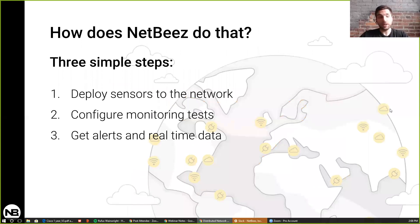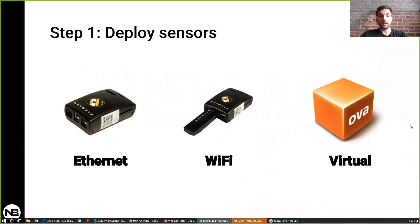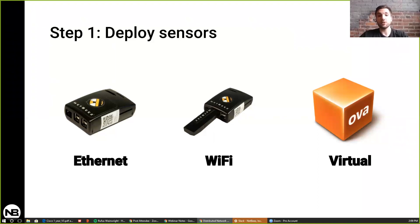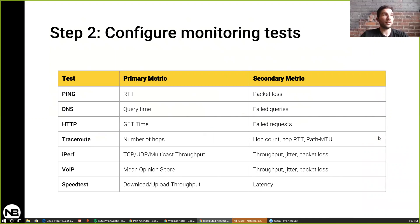So how does NetBees do this? It's three simple steps: first you deploy the sensors, you configure the tests, and then you get alerts in real time. There are many different types of sensors — Ethernet, Wi-Fi, and virtual — all of which provide valuable information for different use cases. For example, the wireless agents can run the same tests as the wired agents but also pick up wireless statistics.